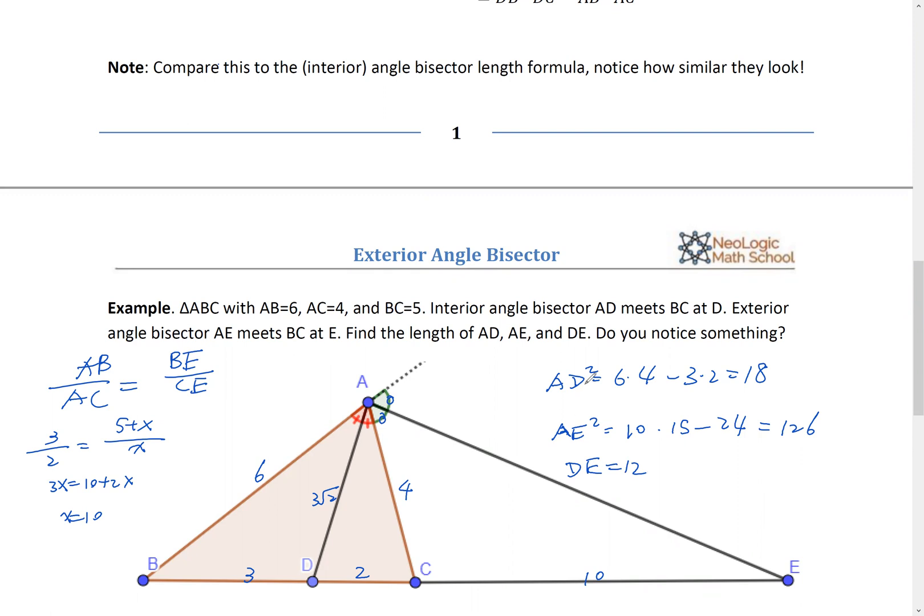And do you notice something? Well, I know the answer, but do you notice something? If I write in squares. Right. So DE square. Equal 144. This, this, and this. Well, you notice something now, right? AD square plus AE square equal DE square. Take a closer look. I'm saying that interior bisector square plus exterior bisector square equals the square of the two intersection points. The length of that.